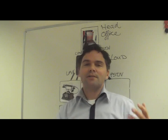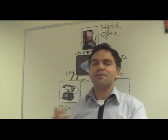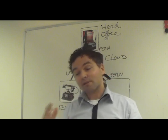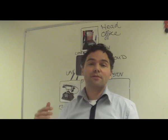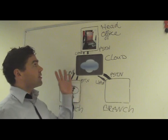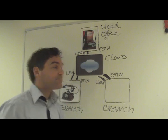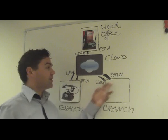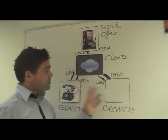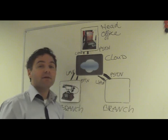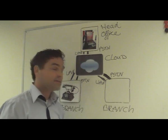We'll go from the traditional PSTN — the public switched telephone network — to the next generation phone network. We have a head office with a phone system and different phones in the network, where people can call each other over the PSTN. The head office and the branch office also have a small private link — it could be a VPN over the internet or an MPLS cloud.